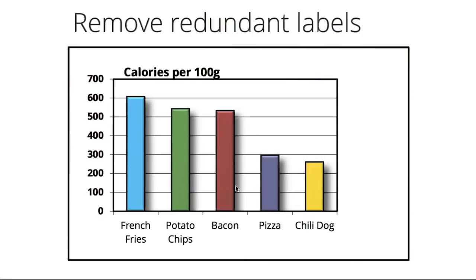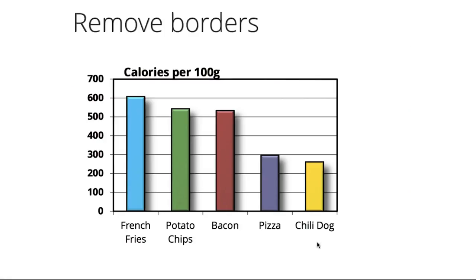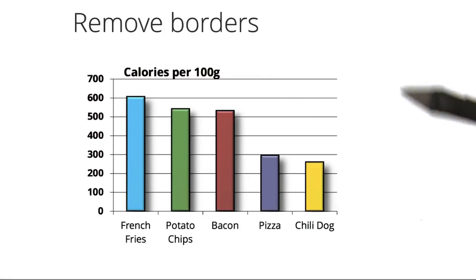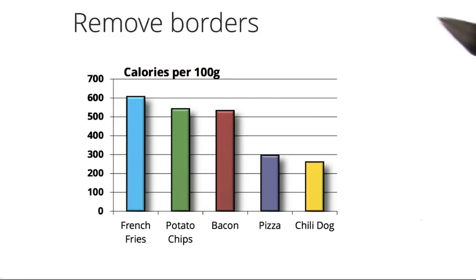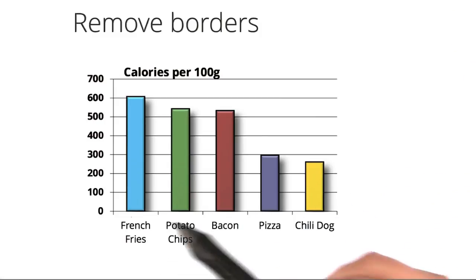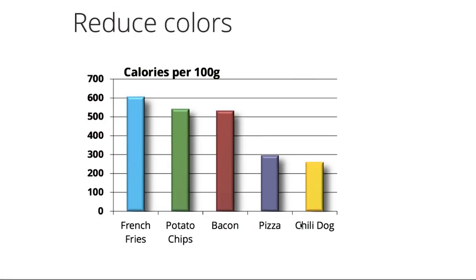Now that we've removed the backgrounds, the heavy borders separating the various elements are no longer necessary, so let's take those out too. Remembering our color theory, we shouldn't use more than one or two colors in a visualization unless it is encoding some value in the data. The color of these bars don't reflect any differences between the different foods, so let's remove all of the colors except for the food of interest. In this case, bacon.